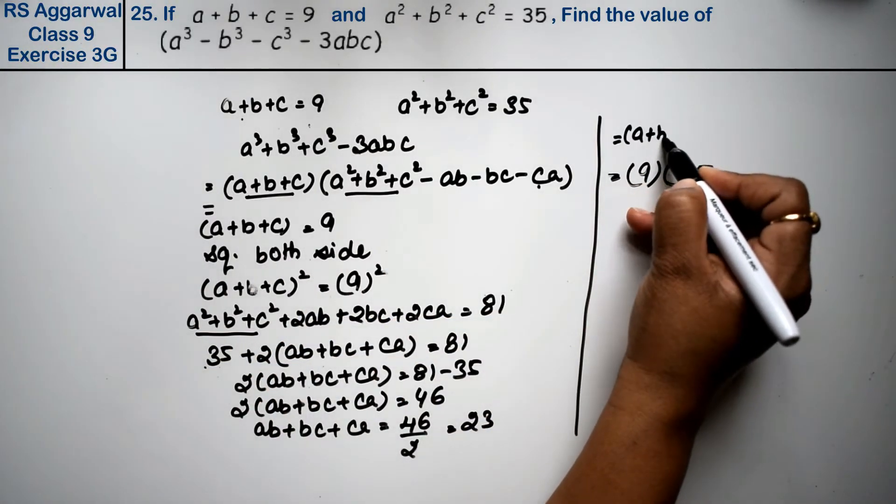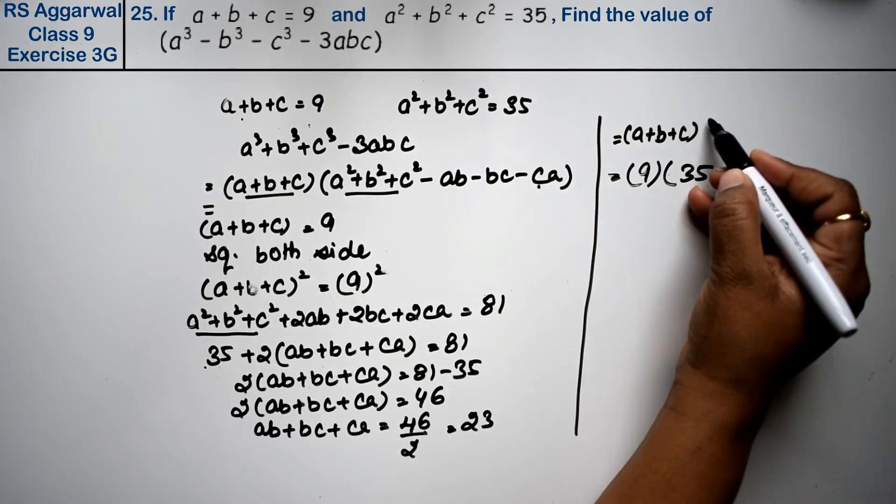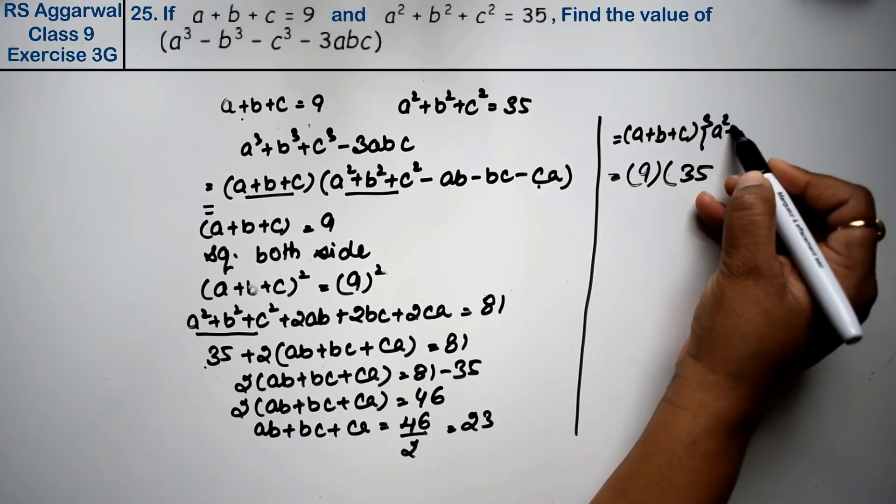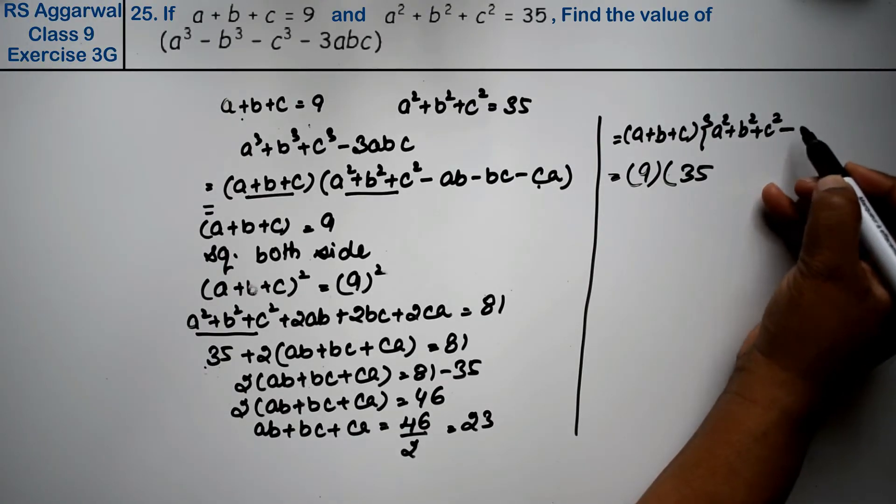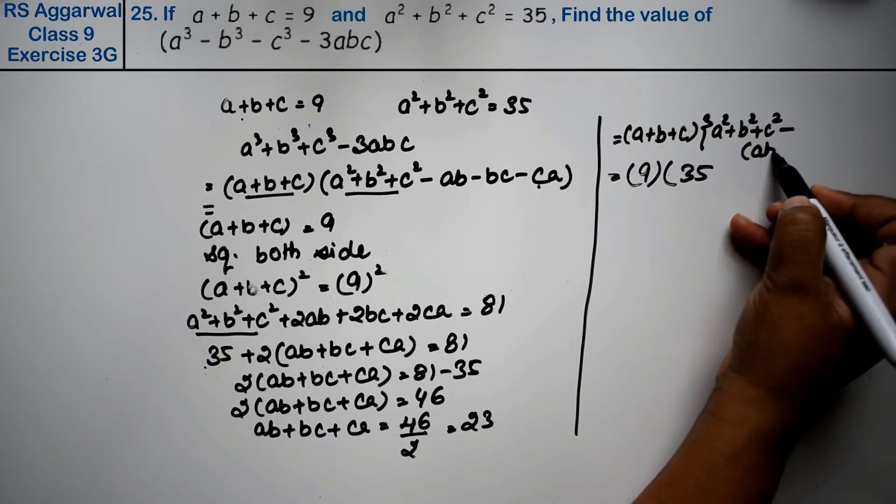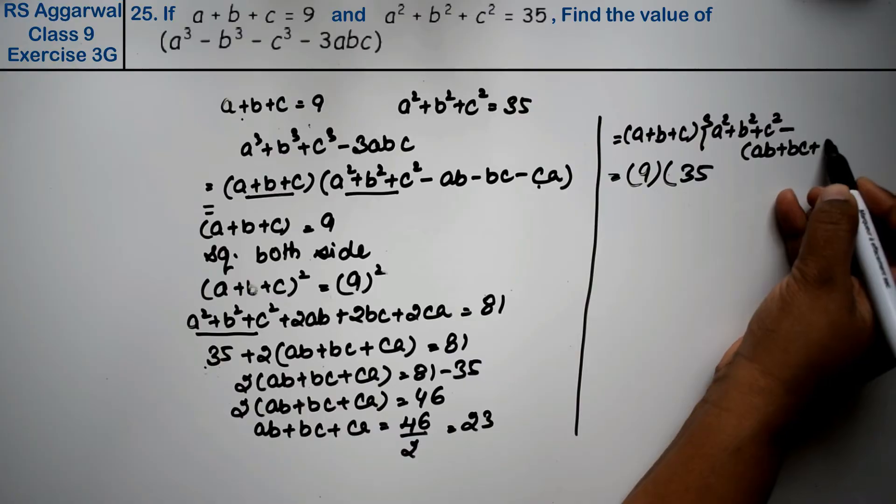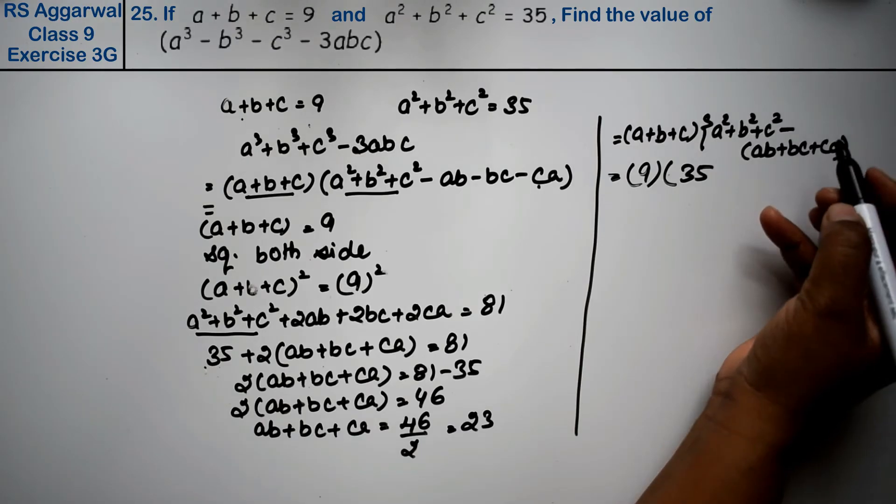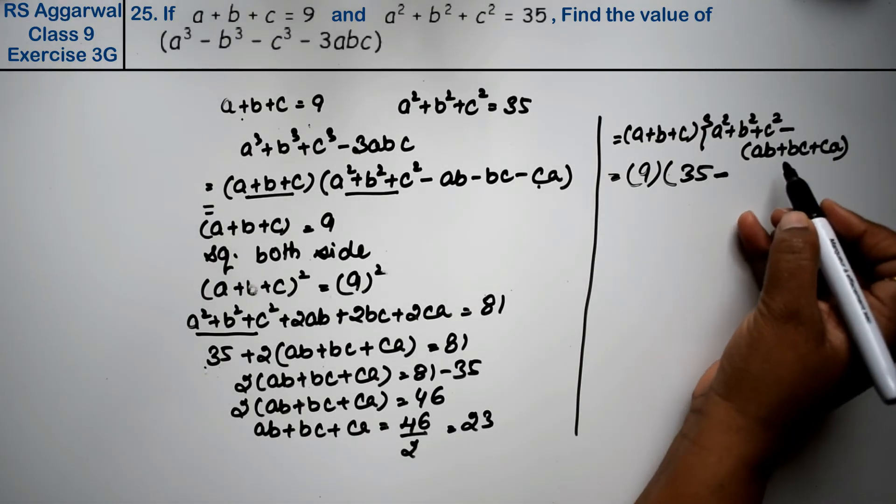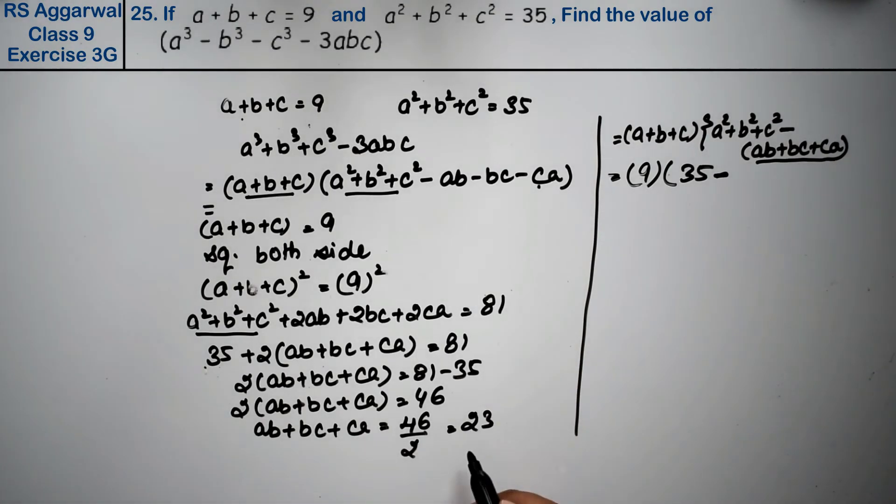A plus b plus c times a squared plus b squared plus c squared minus common, so what do we add in the bracket? Ab plus bc plus ca under minus. The minus comes out and the sign changes. So minus 23.